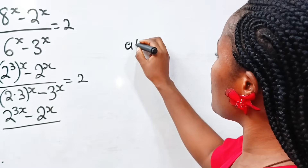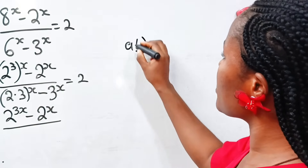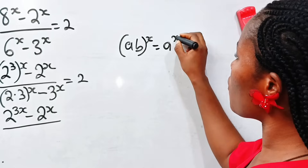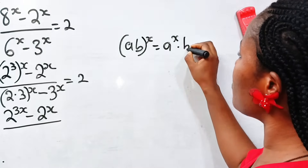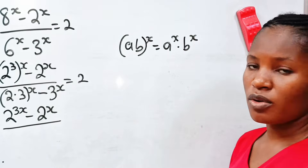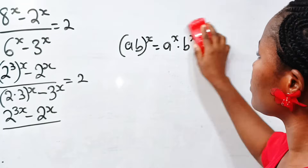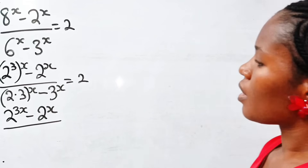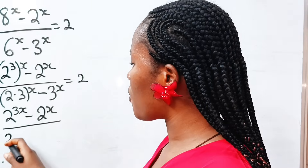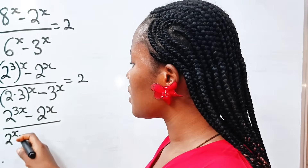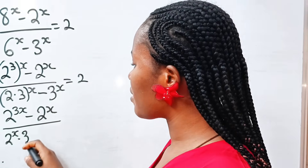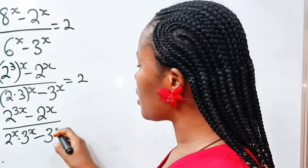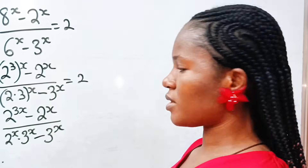When you have a·b raised to the power of x, it is equal to a to the power of x multiplied by b to the power of x. So we have 2 to the power of x multiplied by 3 to the power of x, minus 3 to the power of x.